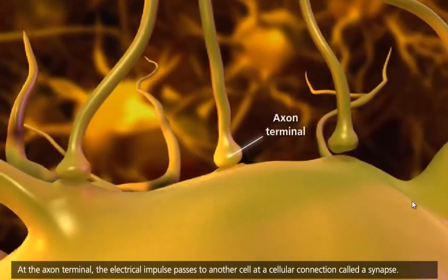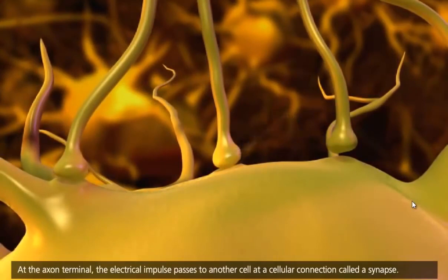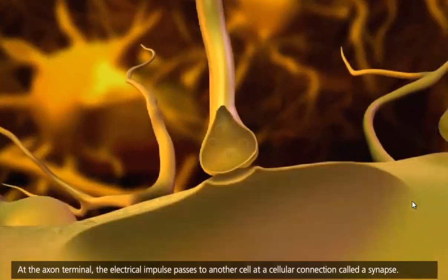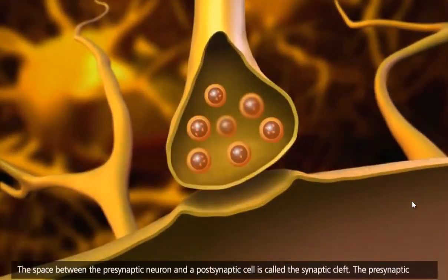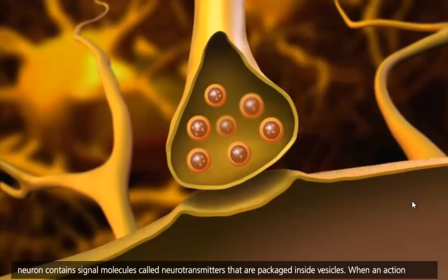At the axon terminal, the electrical impulse passes to another cell at a cellular connection called a synapse. The space between the presynaptic neuron and a postsynaptic cell is called the synaptic cleft. The presynaptic neuron contains signal molecules called neurotransmitters that are packaged inside vesicles.